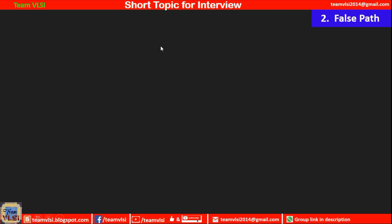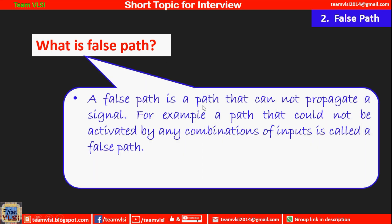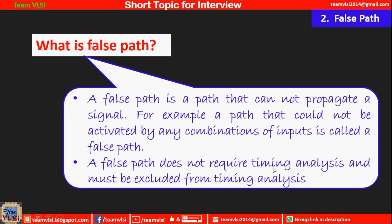An interviewer may ask a question directly like 'What is false path?' or 'Explain false path.' A typical answer is: a false path is a path that cannot propagate a signal. For example, a path that could not be activated by any combination of inputs is called a false path. A false path does not require timing analysis and must be excluded from timing analysis.